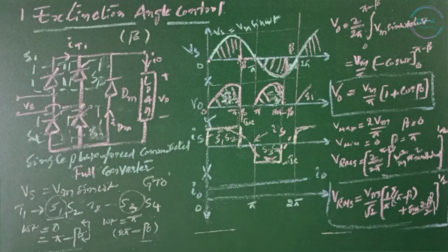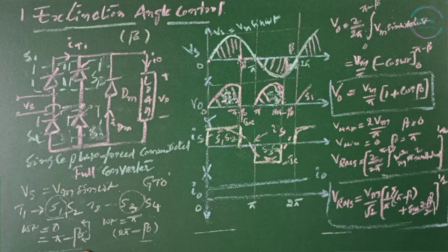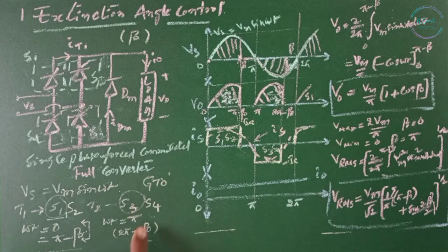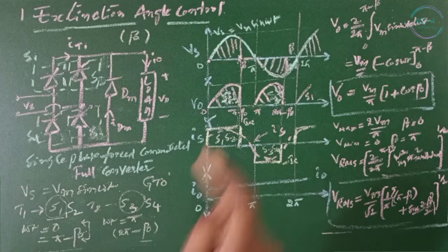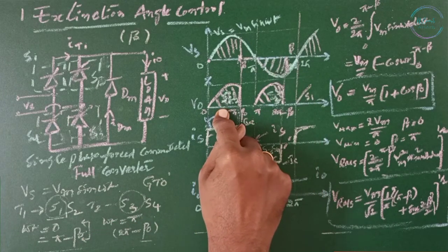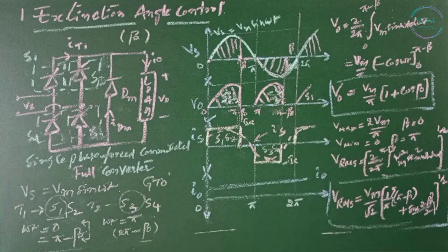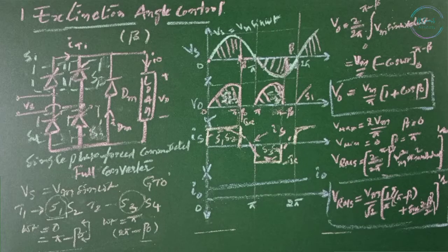Switch S1 and S2 both operate from 0 to pi minus beta, whereas S3 and S4 operate from pi to 2 pi minus beta. S1, S2 operate in positive half cycle and S3, S4 operate in negative half cycle. This will be the output voltage for S1 and S2, and this will be the output voltage for S3 and S4, same as the semi-converter.